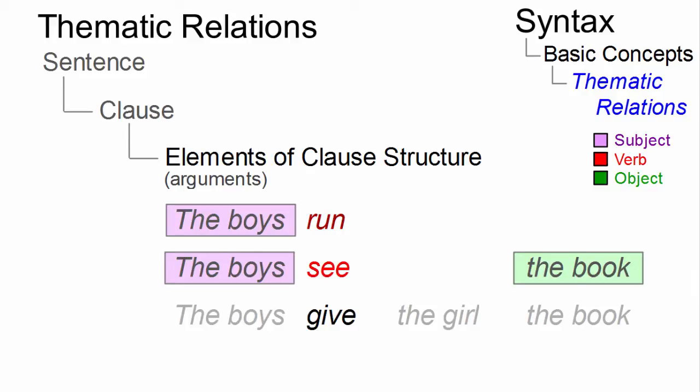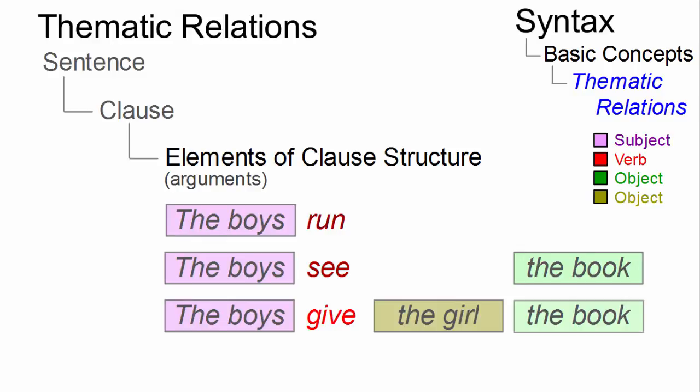'See' has two arguments: a subject and an object. And 'give' has three: a subject, an indirect object, and a direct object.